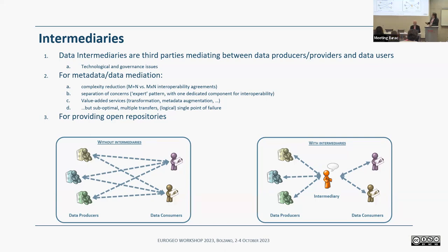Another interesting aspect is that the intermediary can provide added value — for example, metadata augmentation or any kind of transformation during transfer. Of course, there are also drawbacks: the harmonization can be suboptimal at the intermediary level — it could be fine for multidisciplinary interoperability but suboptimal for intra-community use. There are also multiple transfers involved, and another potential drawback is a logical single point of failure — if the intermediary doesn't work, interoperability becomes impossible. Another potential role for intermediaries is providing open repositories to address the challenge of inaccessible in-situ data.